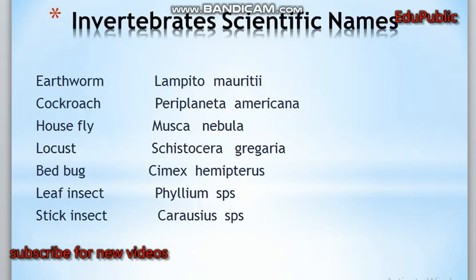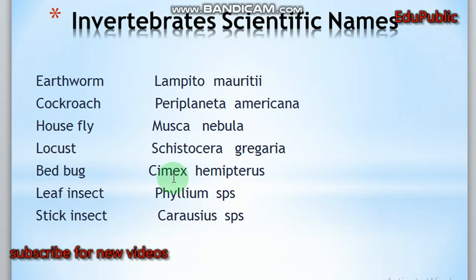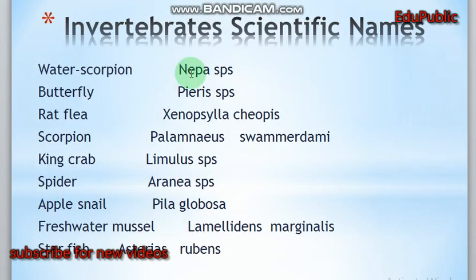Scientific names of some invertebrates important for exams: earthworm — Lampito mauritii; cockroach — Periplaneta americana; housefly — Musca nebulo; locust — Schistocerca gregaria; bat bug — Cimex hemipterus; leaf insects — Phyllium species; stick insects — Carausius species; water scorpion — Nepa species; butterflies — Papilio species.